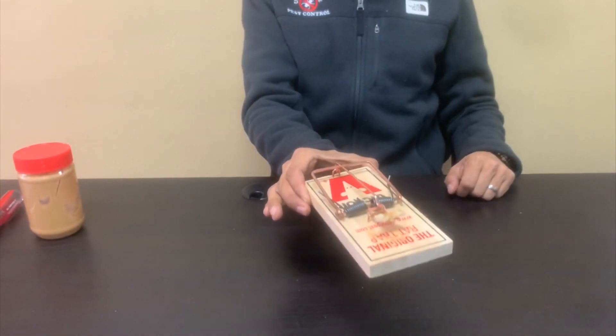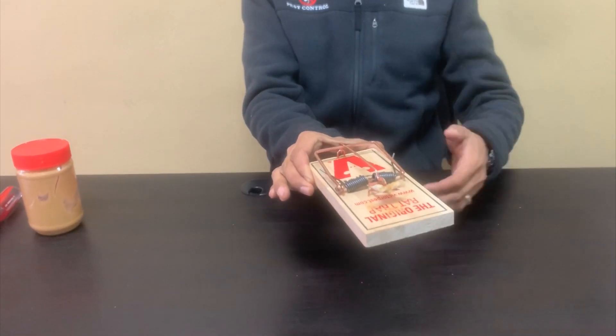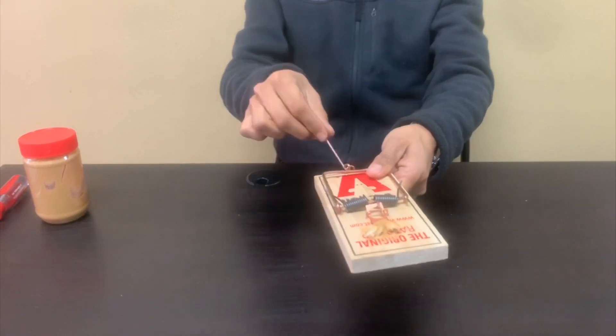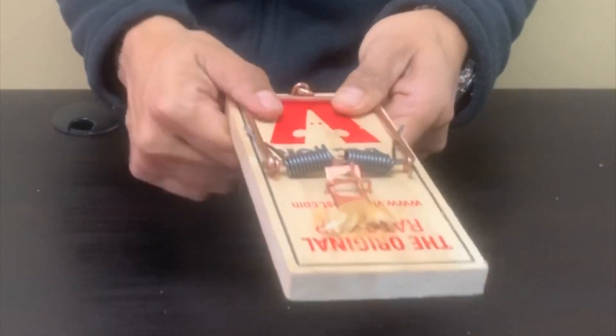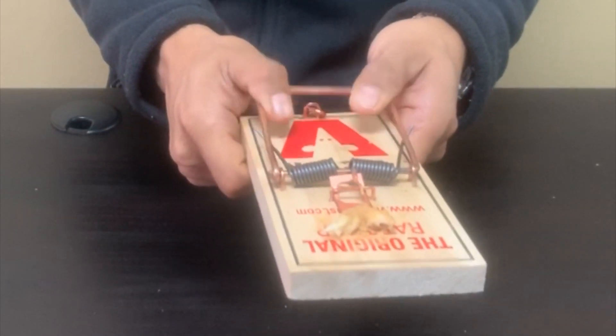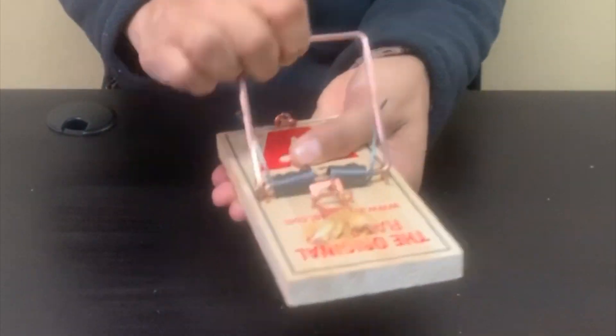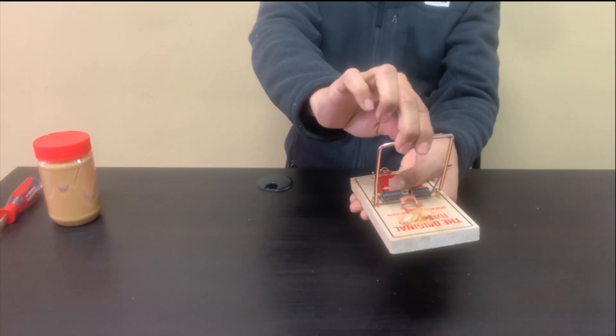To release a triggered trap, again start by holding the trap at the back of the board. Pin the hammer down with your thumb. Remove the hold down bar, always pinning the hammer down with your thumb. With one hand, grip the back of the trap and with the opposite hand, carefully lift the hammer to the front of the board.